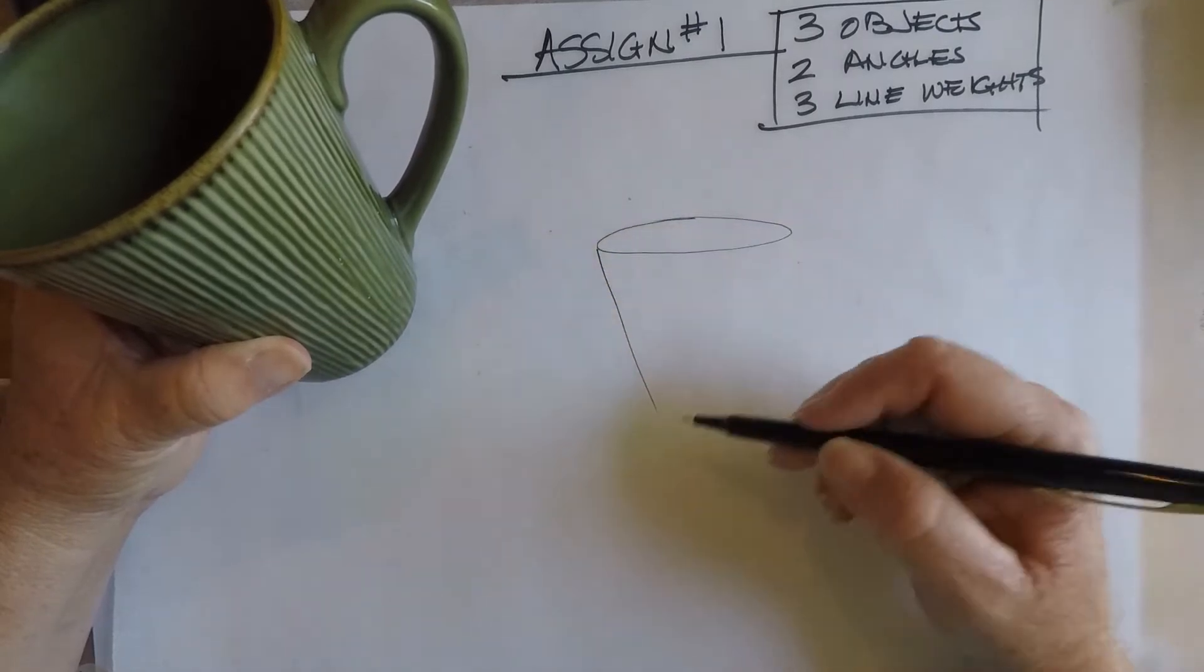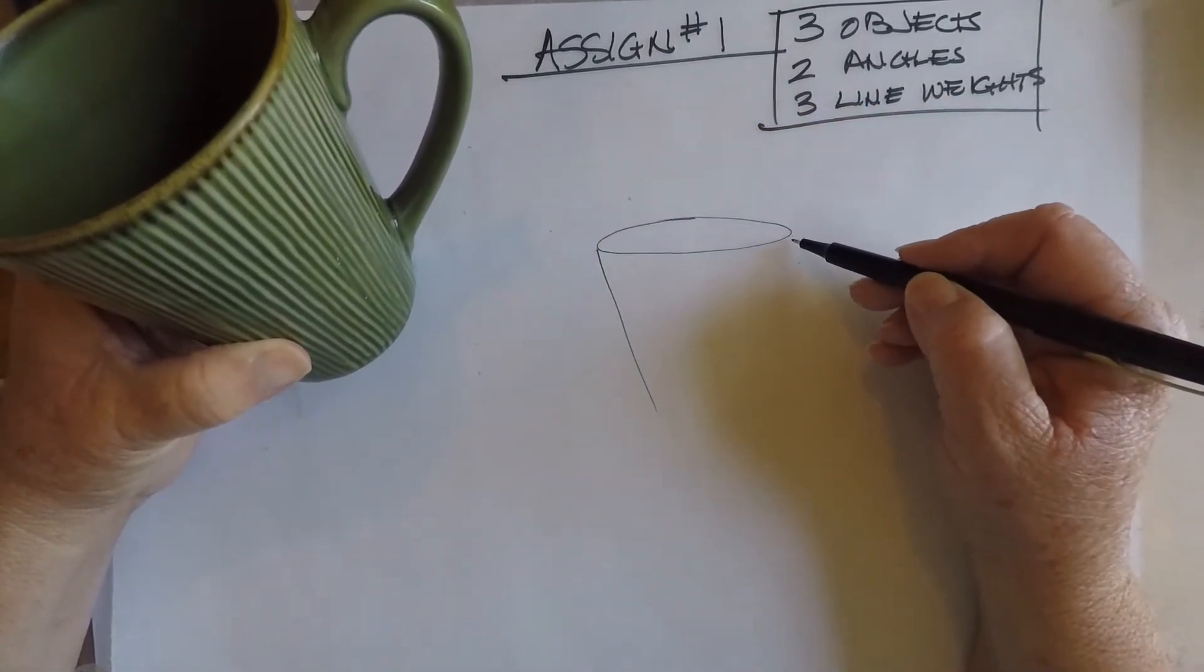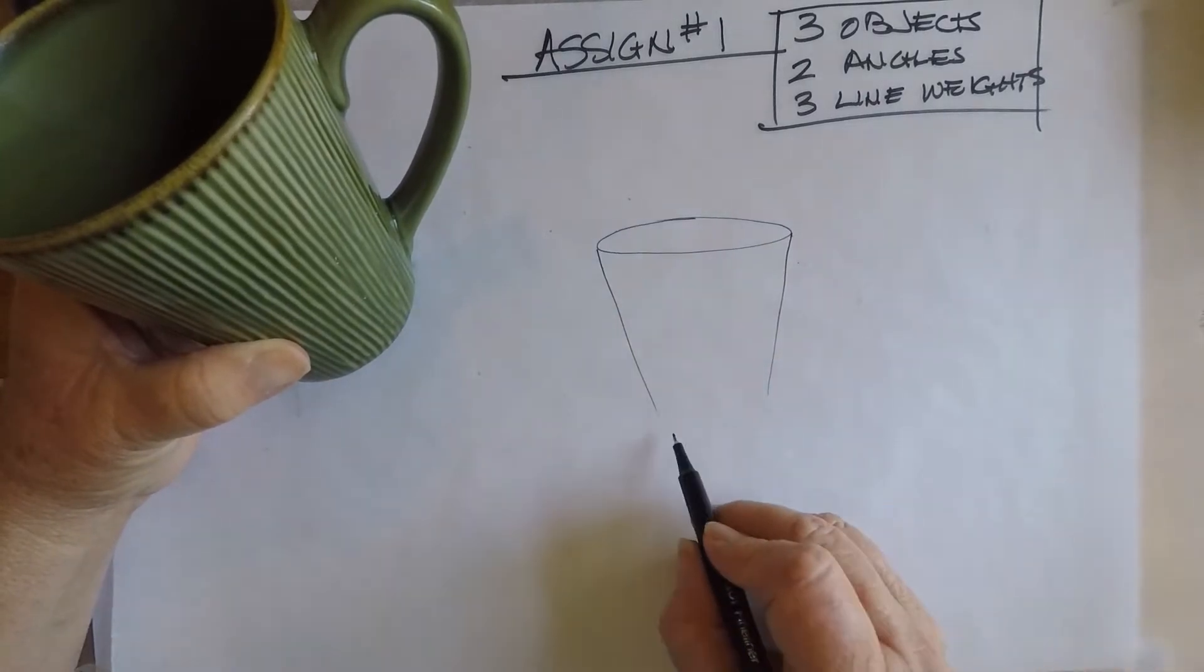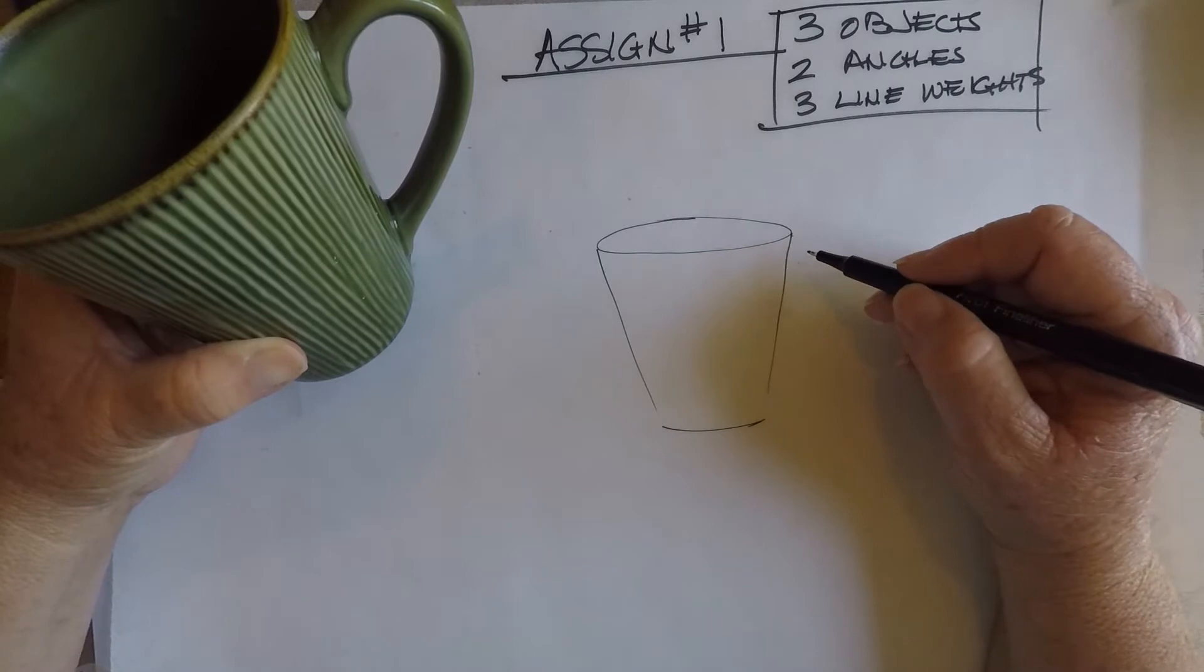And then I'm going to use a little bit of firmer pressure. I'm using my fineliner pen for this part, for the sides of the cup coming down. And then I'm going to use a lighter pressure on the top of the handle.